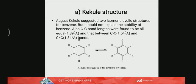He suggested two isomeric cyclic structures which are called Kekule isomers or Kekule structures. But he could not explain the stability of benzene, why benzene is stable in spite of having three double bonds.